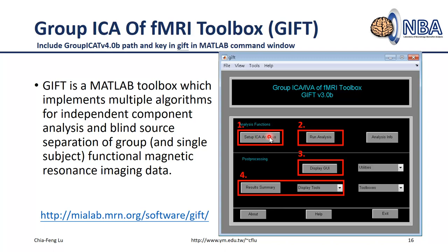After setting up all parameters, you'll have an ICA parameters file in your assigned folder. Then click 'Run Analysis' to perform all analysis steps. After running, the Display GUI will automatically pop up. If not, click the display button. You can also review previous analyses by clicking Display GUI and selecting the parameter file created in the first step.